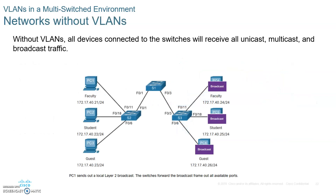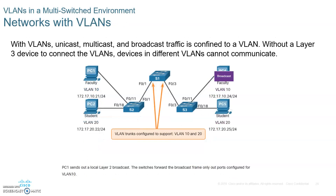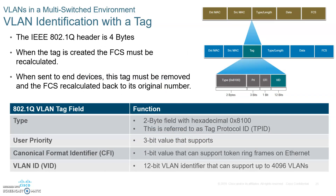If you don't have a trunk, you'll need a dedicated connection between the switches, which we don't really want — the trunk is the best way to go. Remember, you will still need a Layer 3 device to allow VLANs to communicate with each other. These are Layer 2 switches, so you can only send frames to the same VLAN on the other side. You cannot send frames from one VLAN to another without a Layer 3 device such as a router or Layer 3 switch.